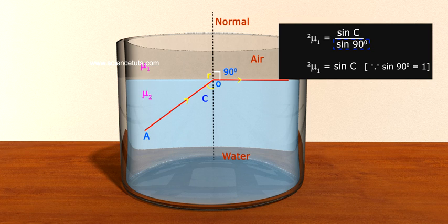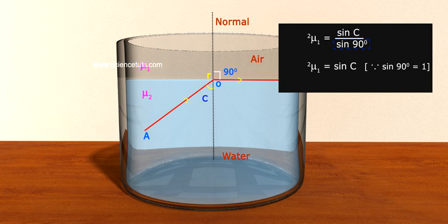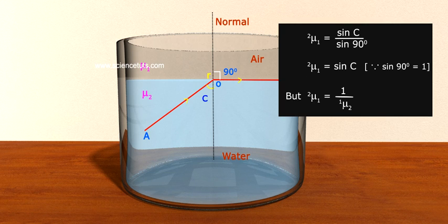Since sin 90 degree is equal to 1. But, 2 mu 1 is equal to 1 by 1 mu 2.